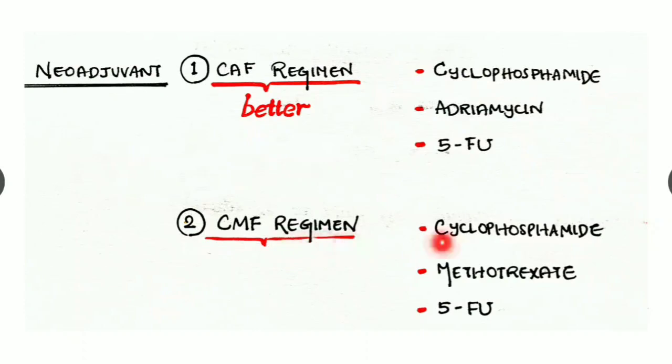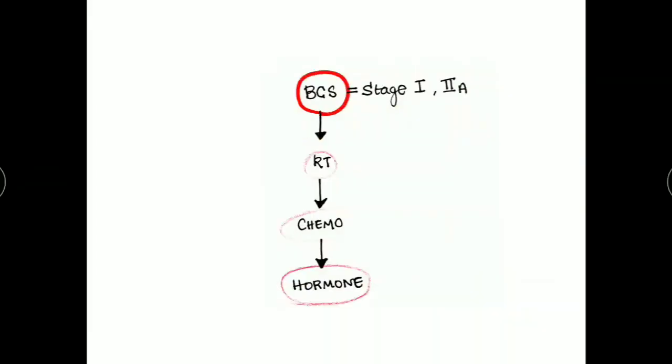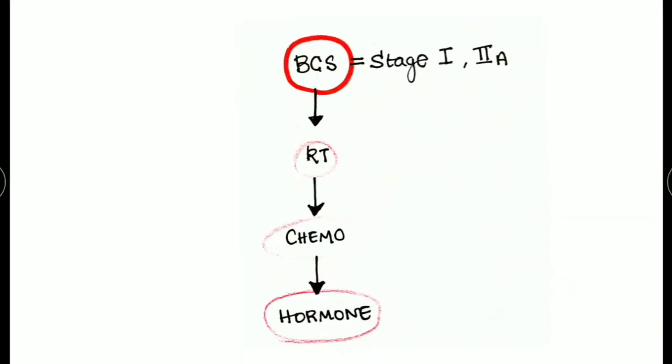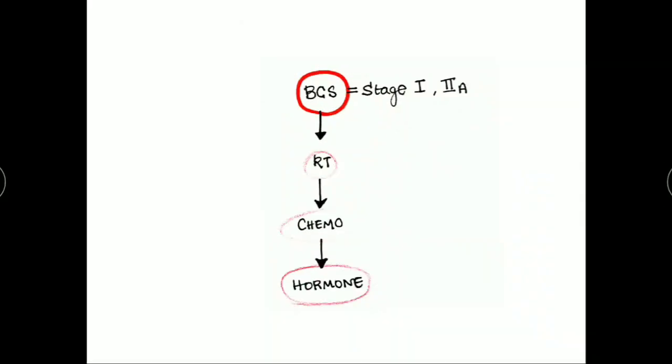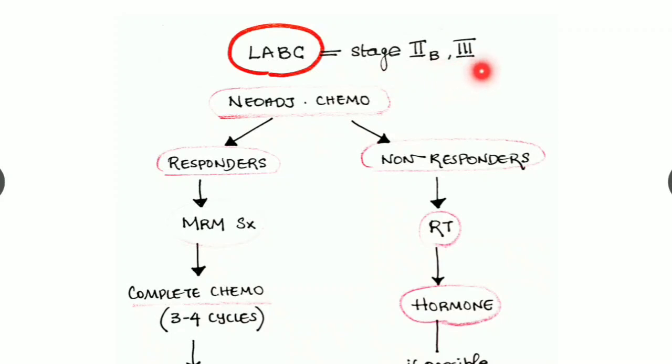Next, the flowchart of management of various stages of the disease. For stage 1 and stage 2A, we can use breast conservation surgery followed by radiotherapy. If the tumor still persists, we can go for chemotherapy and also hormone therapy.